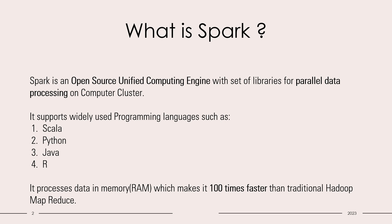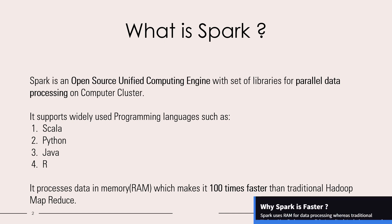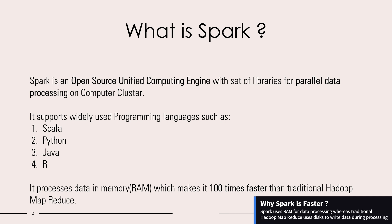The important reason why we should use Spark for data processing is that Spark is 100 times faster than MapReduce of traditional Hadoop. Spark processes data using RAM, which is in-memory and which is very fast.